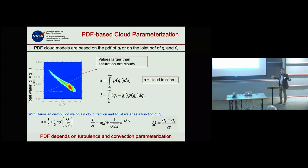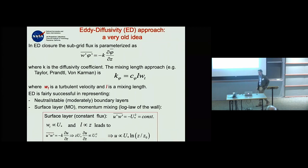The main quantity you need to calculate for turbulence and convection parameterization is the subgrid vertical mixing — the mixing your model cannot resolve. The idea of eddy diffusivity is very old, essentially as old as the Navier–Stokes equations in practice.